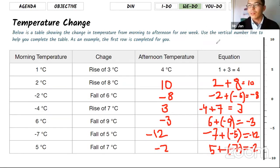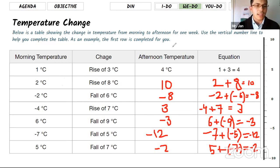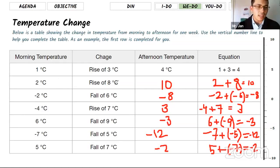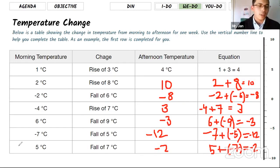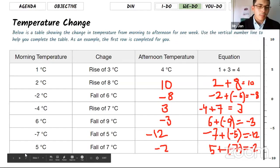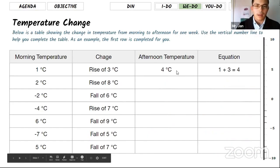Everybody got perfect scores — great job! This is about real-life examples of adding and subtracting positive and negative numbers. That's why we're learning this concept in math: why do we need to add negative numbers? This is where we need it in everyday life. I'm going to clear out and let's see the next slide.